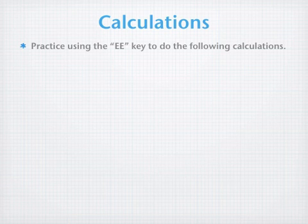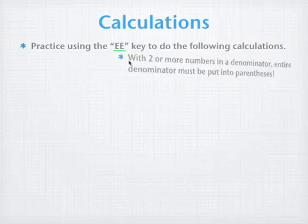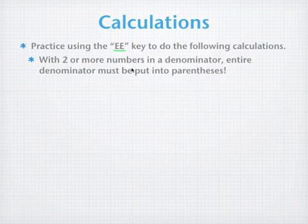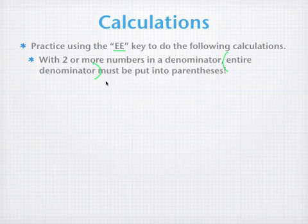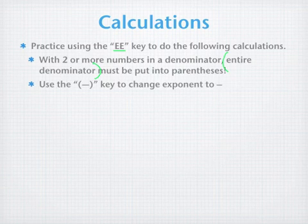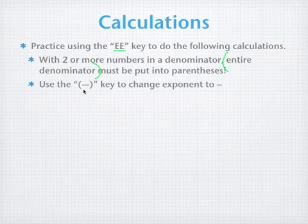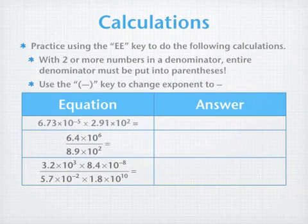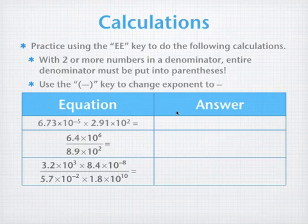For calculations using scientific notation, make sure you're entering things correctly — use the EE key for all calculations. If you have two or more numbers in a denominator, put the entire denominator in one set of parentheses to ensure the calculation is done correctly. Use the negative sign key, not the minus key, to change the exponent to a negative exponent. Here are equations to practice using your calculator. Pause the video and then we'll come back and see how you did.